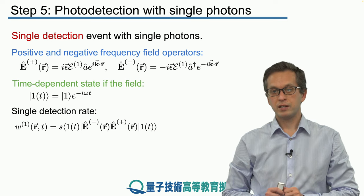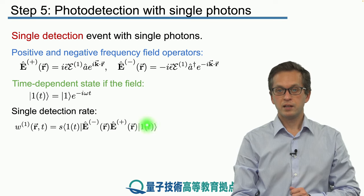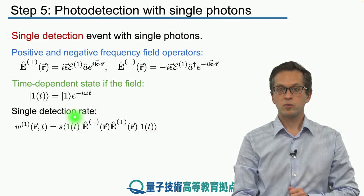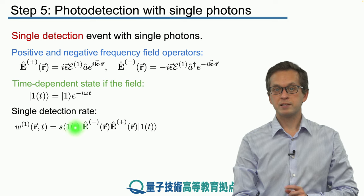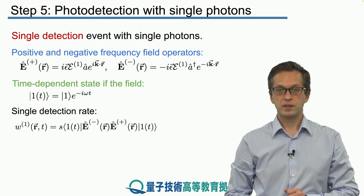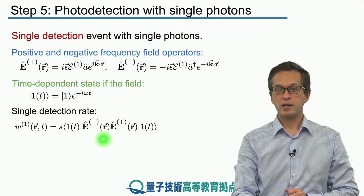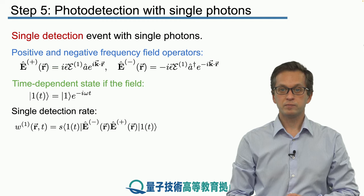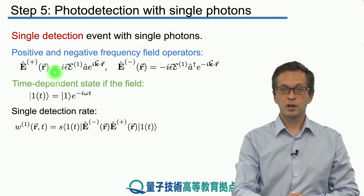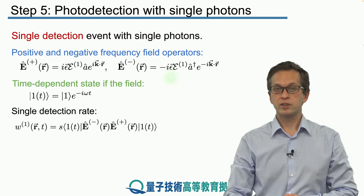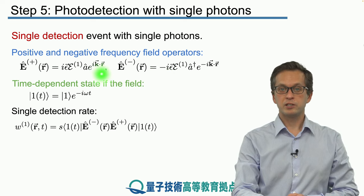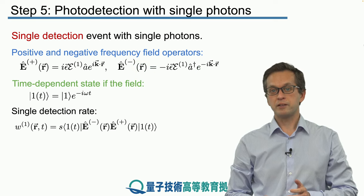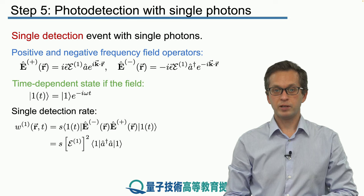But notice that something very nice happens here. e to the power of minus iωt coming from this ket cancels with the e to the power of plus iωt coming from that bra over there. Equally, when we substitute for E minus and E plus, we see that the minus i times i is just equal to 1. The dot product of the polarization vector here with itself is equal to 1. And also the exponentials e to the ik·r times e to the minus ik·r cancel.